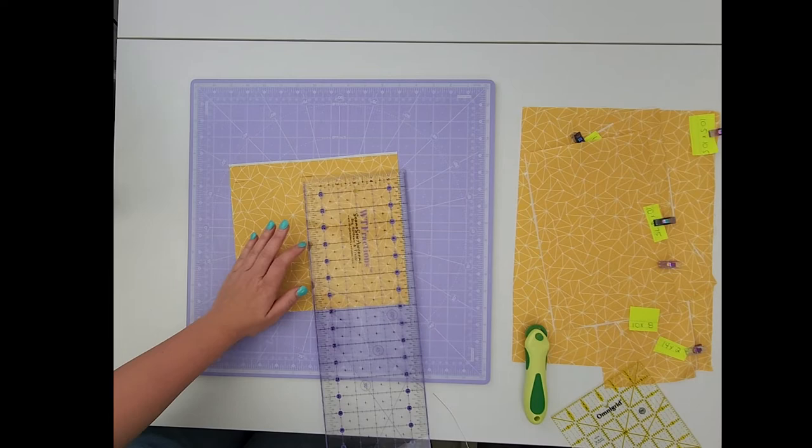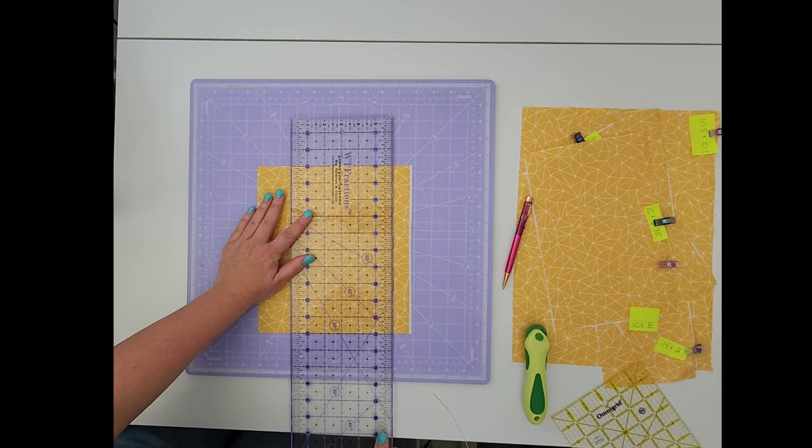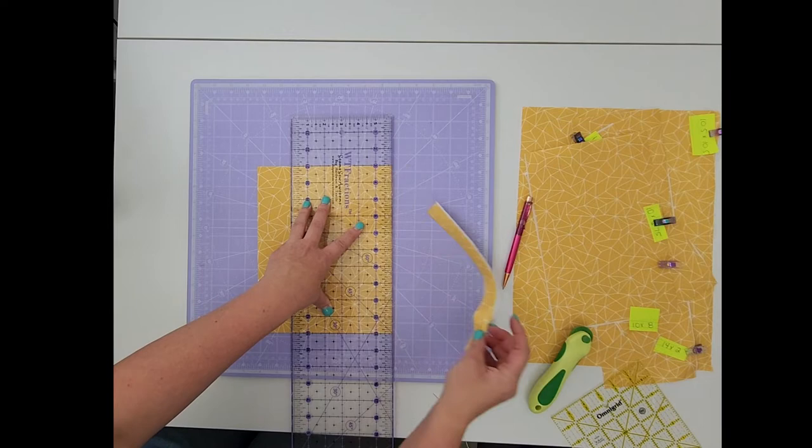Rotate our fabric, line up the straight edge that we have already cut with the straight edge on the ruler, the 3 marks that we have just cut, and cut along the lines. Now we can check that we have a 10x8 rectangle.